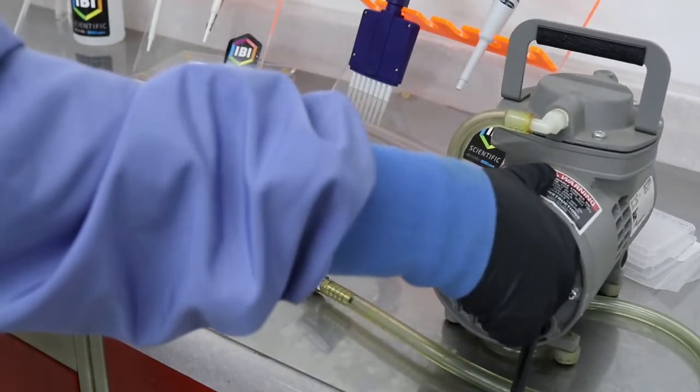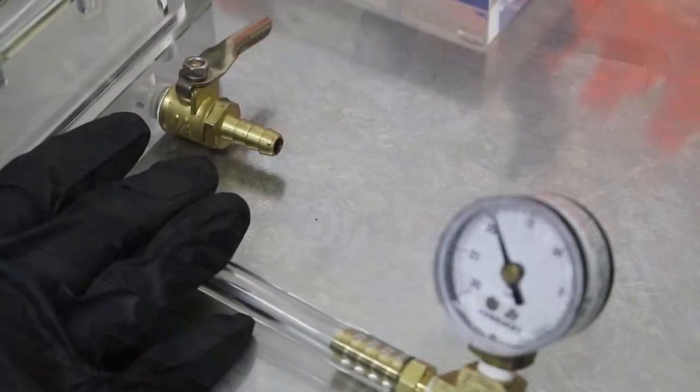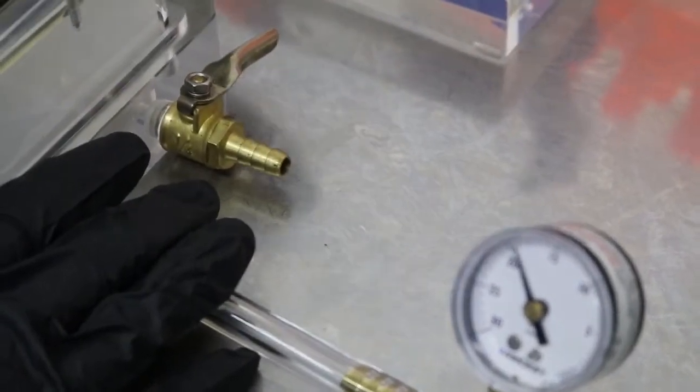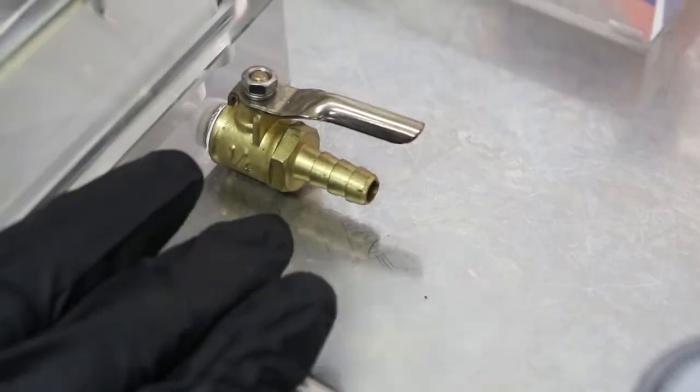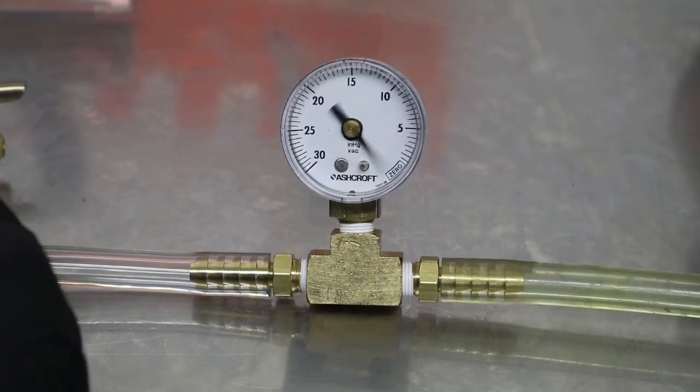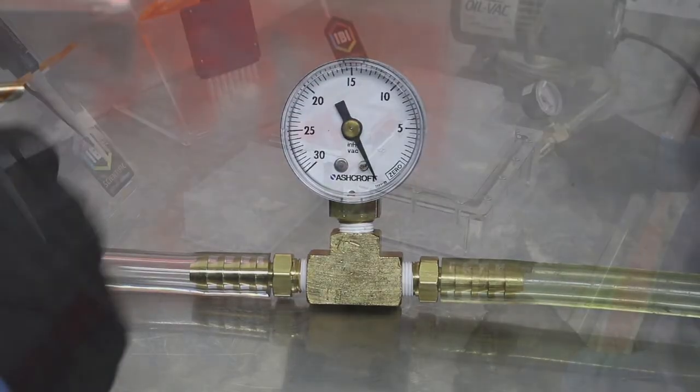Once the sample is dry, turn the vacuum pump off. Next, open the release valve to release all of the pressure. It is best to return the pressure to zero before removing the binding plate.